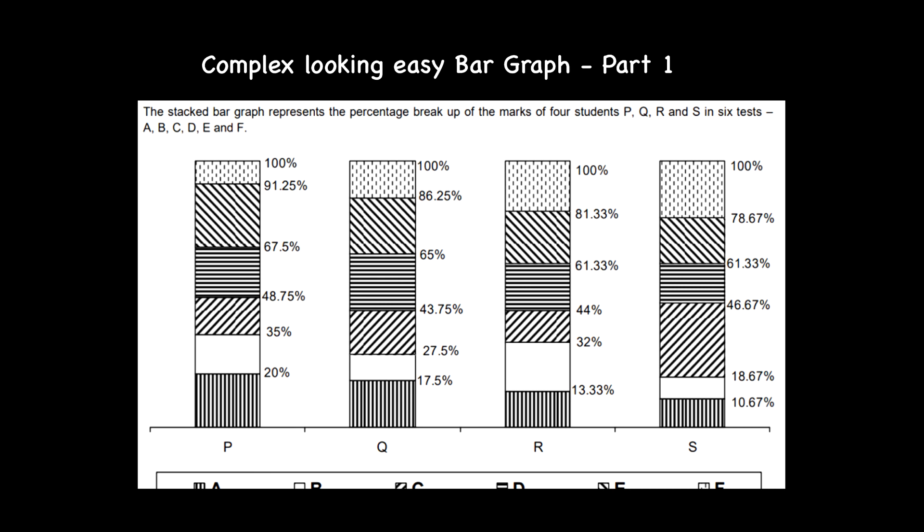In this video we'll be discussing part one of a complex-looking but easy bar graph. The bar graph right in front of you has so many sections in a single bar. Whenever a person comes across these kinds of questions, the first look is always scary. It looks like 'oh my god, so many percentages, so many divisions.' There are six divisions in a single bar and four such bars, so that might look like a difficult set to people.